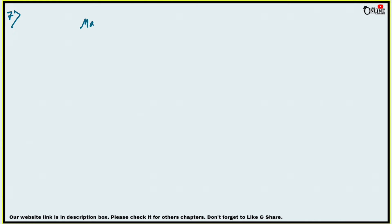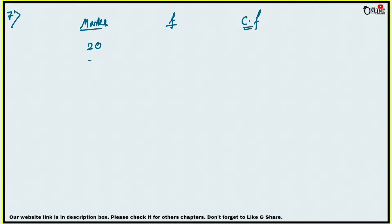In sum number 7, find the median for the following distribution. First you have to make columns: the first one is marks, the second is frequency (that means number of students), and the last one is cumulative frequency. Write down the marks: 20, 70, 50, 60, 75, 90, and 40.